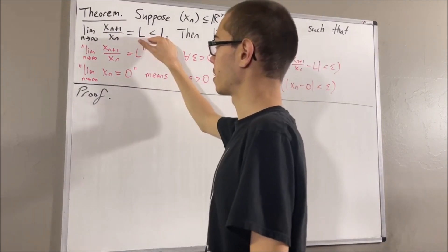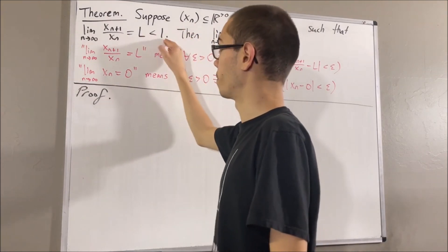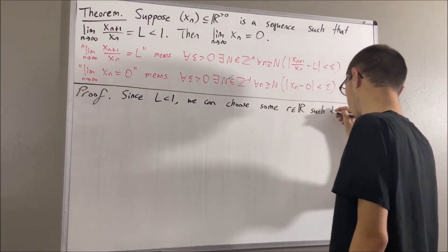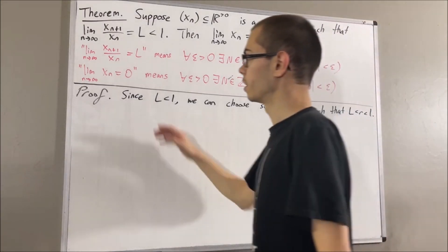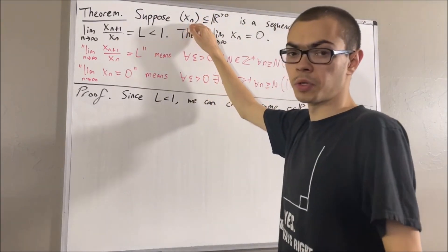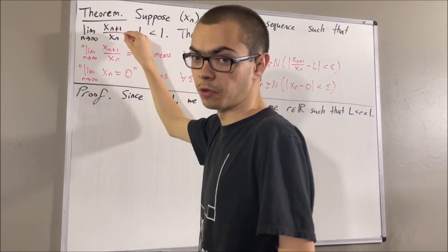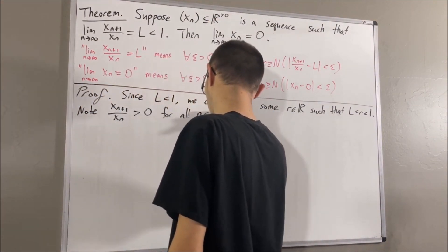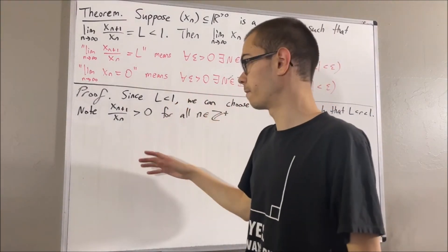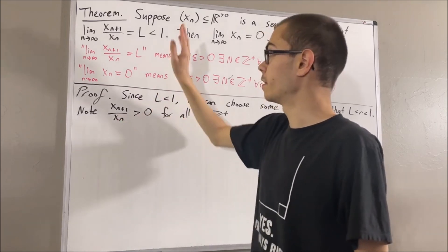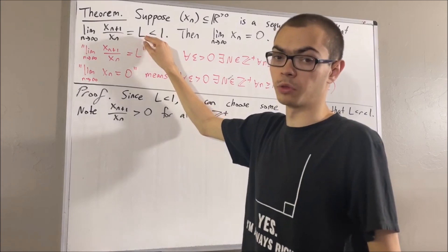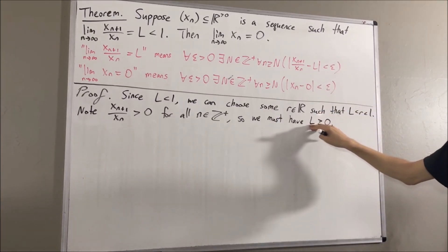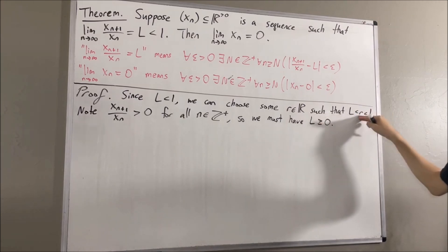Now to start on the proof, since l is less than 1, certainly there is some real number between l and 1. So let's pick some real number between l and 1 and call it r. Notice, since xn is a sequence of positive real numbers, certainly x_{n+1}/x_n must be greater than 0 for all positive integers n. A property of limits tells us if every term in the sequence is positive, then the limit it converges to must be greater than or equal to 0. So l is greater than or equal to 0. Therefore, 0 ≤ l < r < 1.